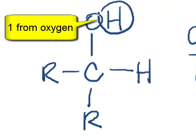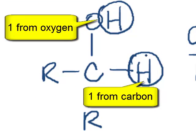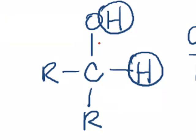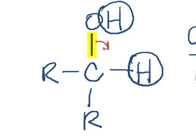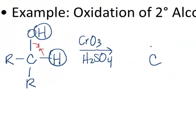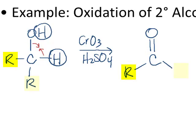Essentially, we're going to remove two hydrogens from this molecule, and we'll take the remaining bonds — in this case the single bond to the oxygen and the single bond to the hydrogen — and combine them together to make a double bond. The result is that our final molecule contains the carbonyl bond, carbon double bonded to an oxygen. The hydrogens have been removed, but the R groups that were attached still remain.